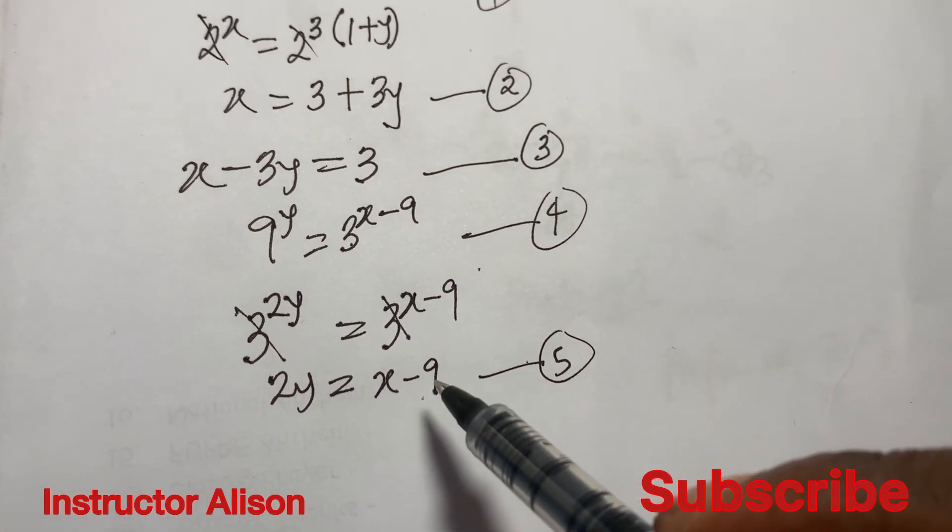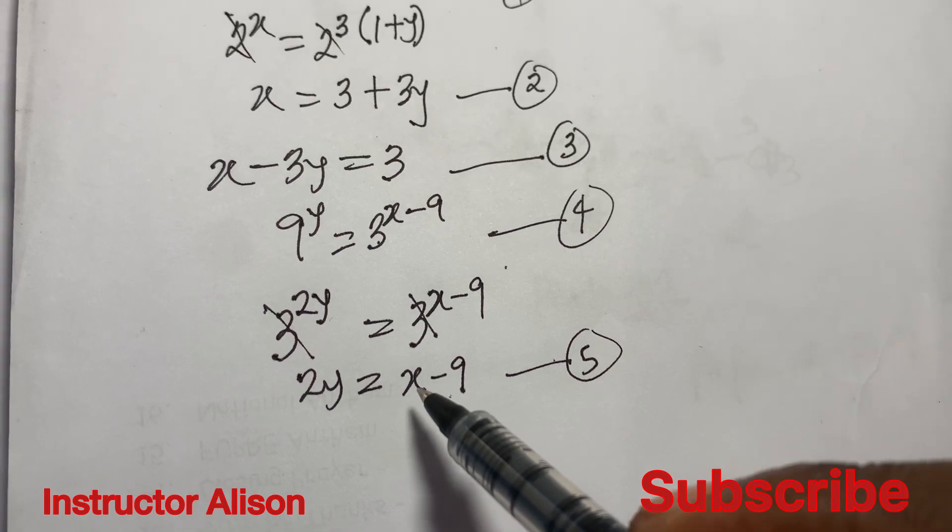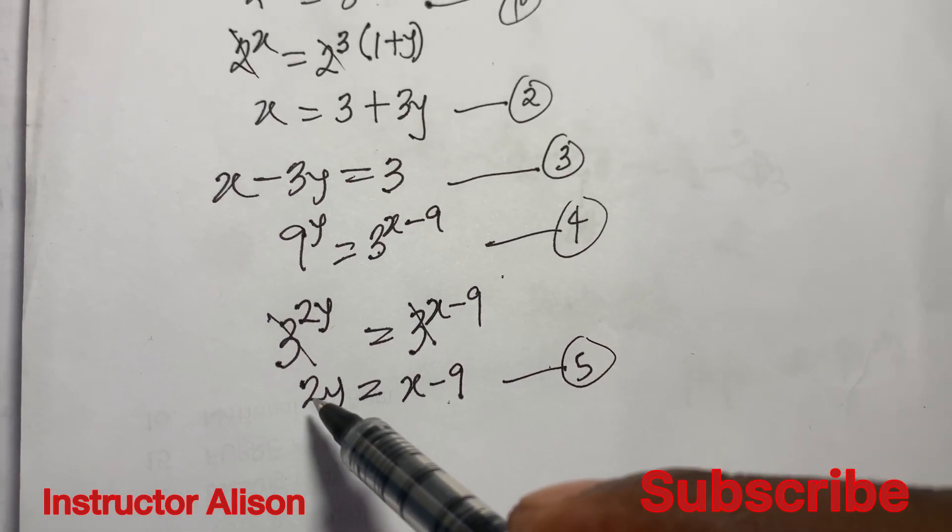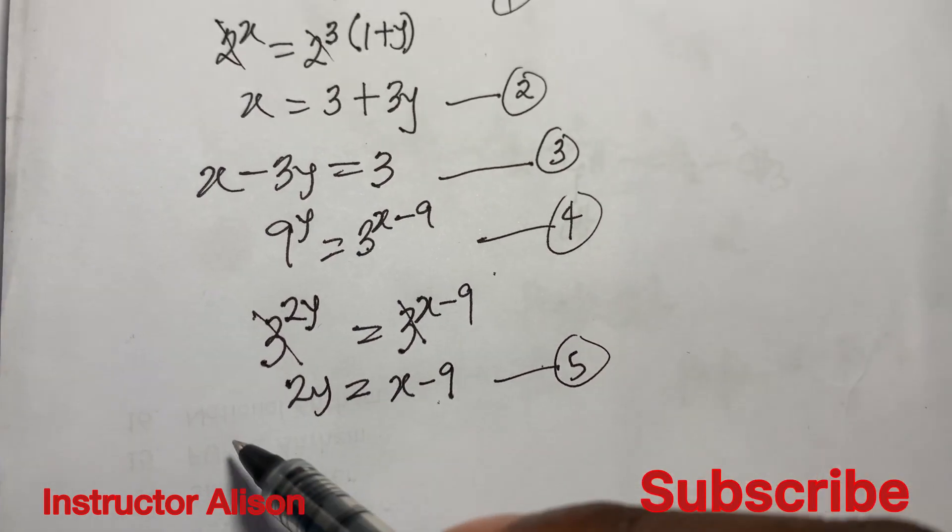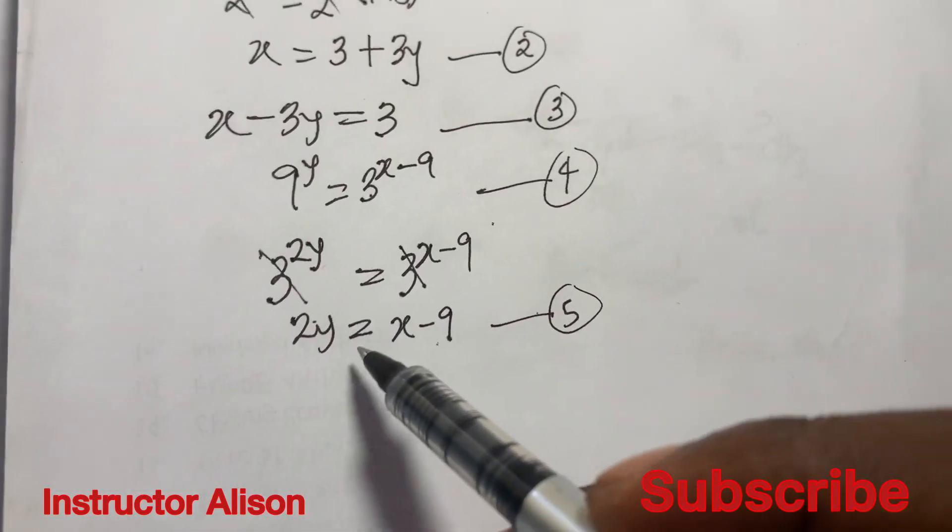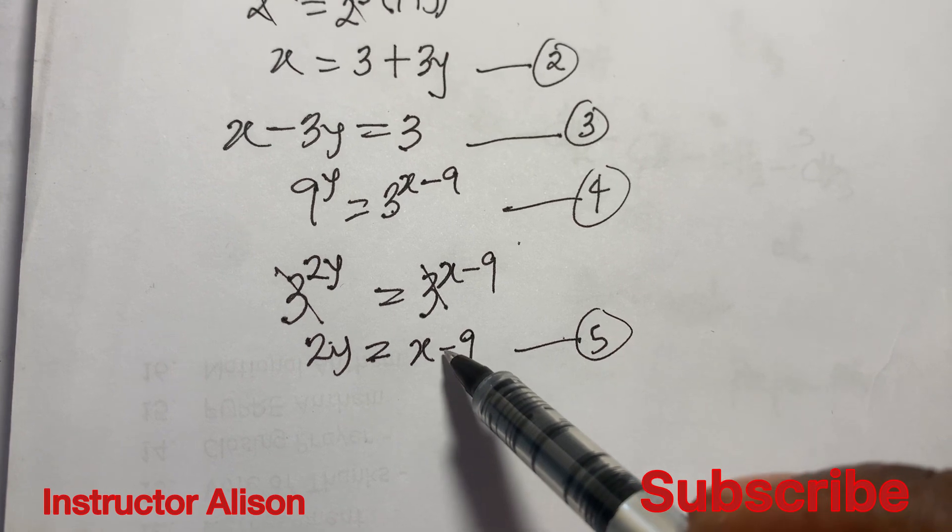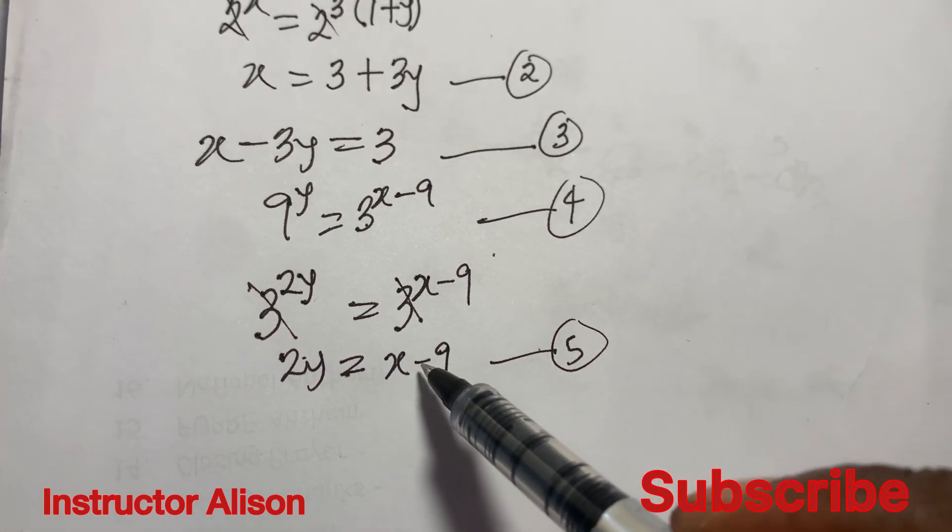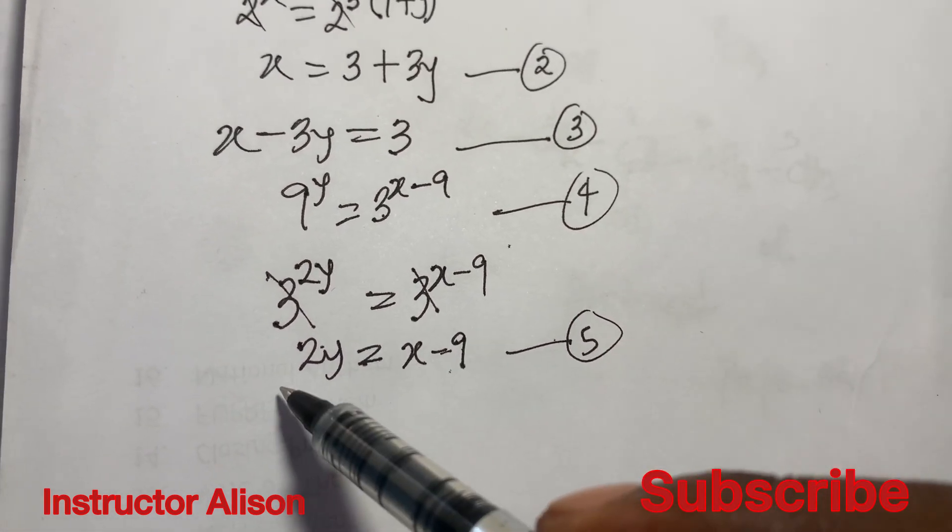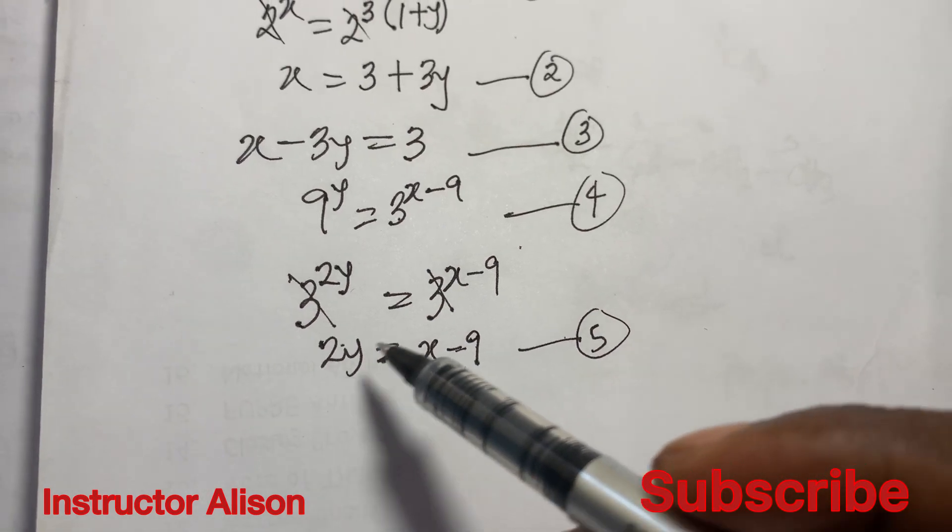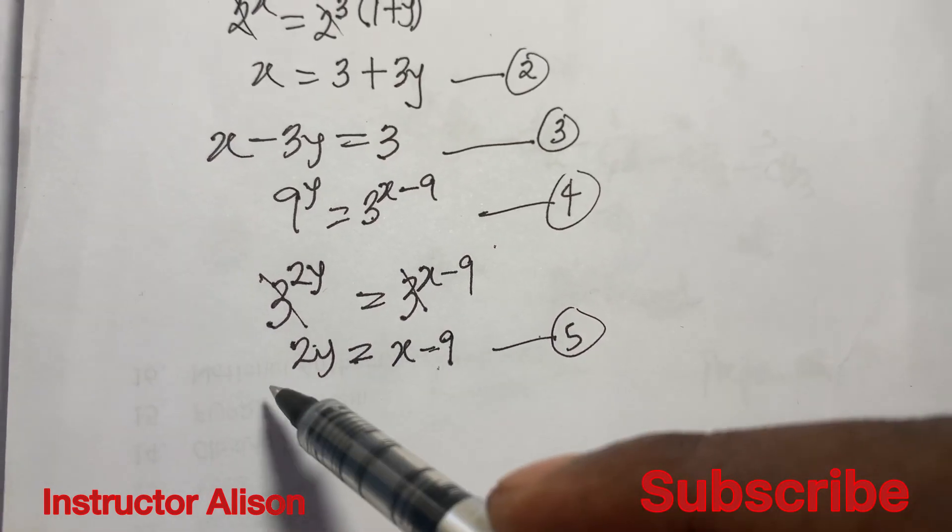Which is 2y equals x minus 9. We still need to make this equation, let's say equation 5, look like equation 3, so that way we'll make sure that x and y are on the same part and the constant is on the other part.